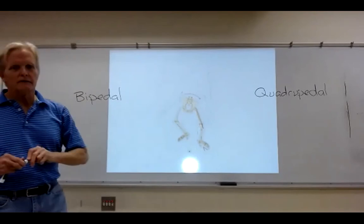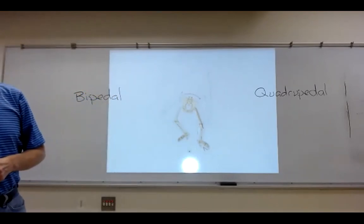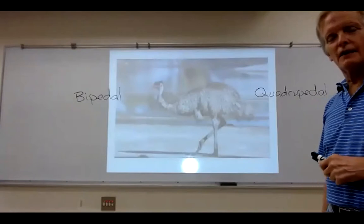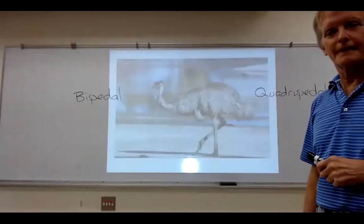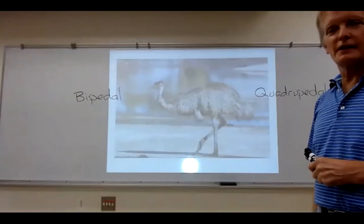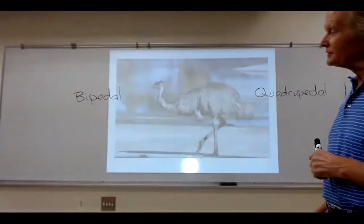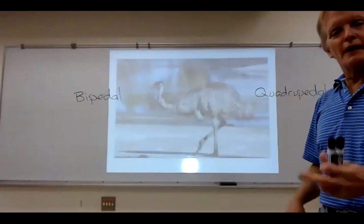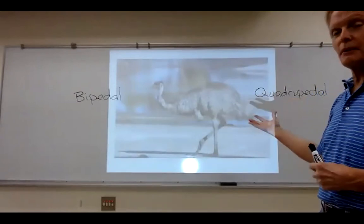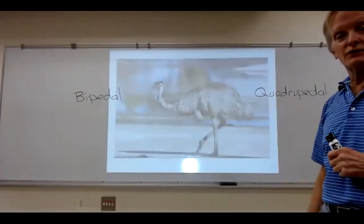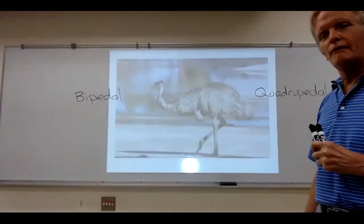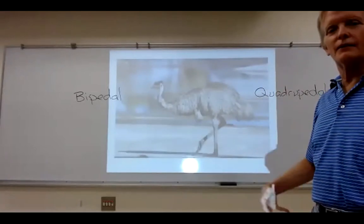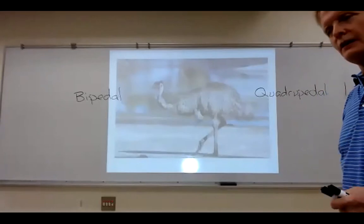Be careful about how you categorize organisms. This is an emu — it moves around on two hind limbs, so it's a biped. It has wings but doesn't fly. It's a very fast, agile bipedal organism on the ground. Don't think that humans are the only bipeds or that we're the only ones who have learned to stand on two limbs — that's not true for all animals.